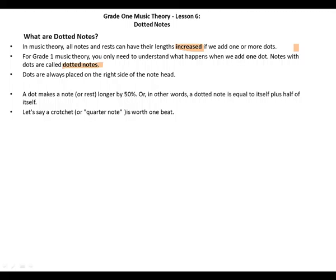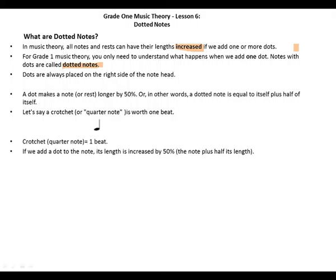Let's say a crotchet or quarter note is worth one beat. If we add a dot to the note, its length is increased by 50 percent - the note plus half its length. This is a dotted crotchet. It equals a crotchet plus half of a crotchet, which is a quaver. So dotted crotchet equals one plus half beat, which equals one and a half beats.